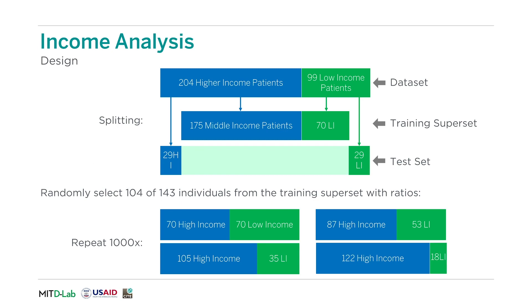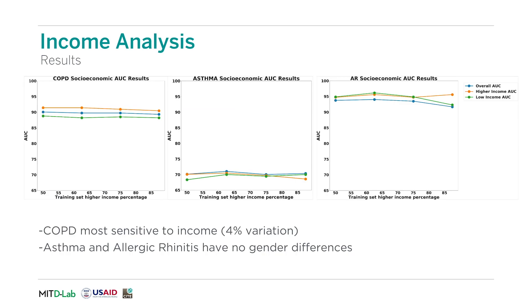Moving on to the income bias analysis, the training datasets and test datasets were divided as shown. Similar to the gender study, representativeness based on income was varied for the training dataset. The results for predictive accuracy for allergic rhinitis, asthma, and COPD are shown on the slide. Again, we see very little difference in accuracy as we change representativeness within the sample. COPD is the most sensitive to socioeconomic status, with a 4% difference in model accuracy for high-income and low-income populations. Asthma and allergic rhinitis show no difference in performance.